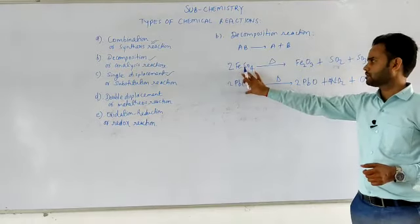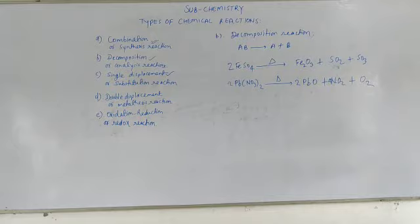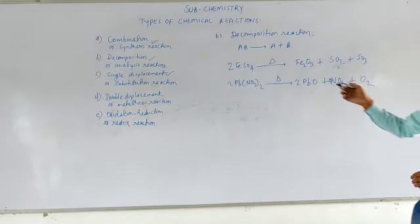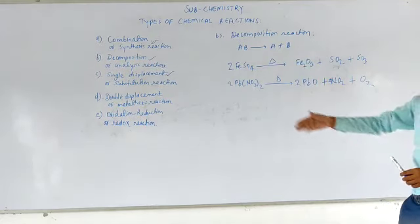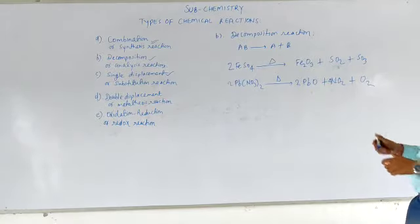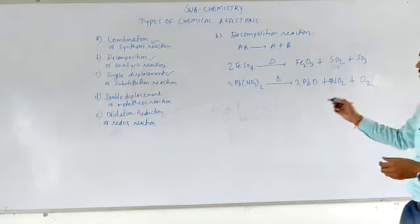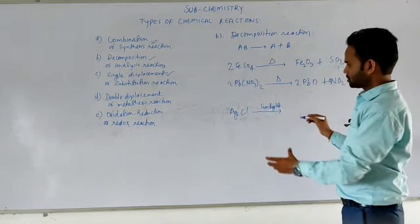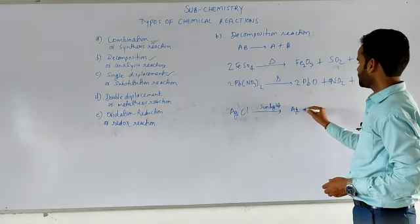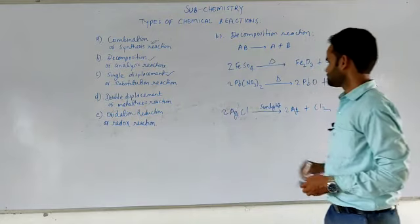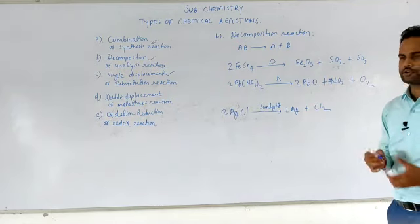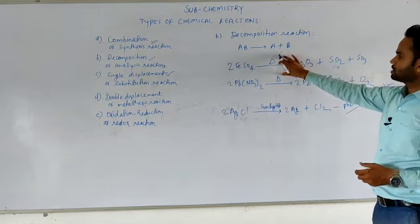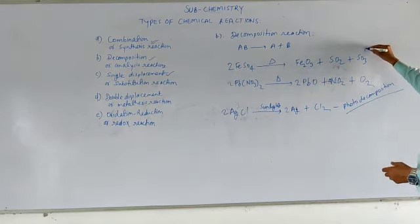In decomposition reaction, a complex compound splits up into its simpler substances. So AB → A plus B is the general formula. For this type of reaction, activation energy is needed — it can be in the form of heat. Reactions that need heat are known as thermal decomposition. There is also photodecomposition: AgCl (silver chloride), when put in sunlight, breaks down into silver and chlorine.